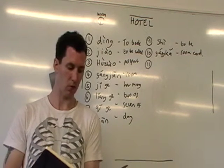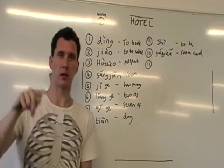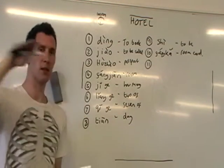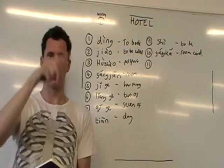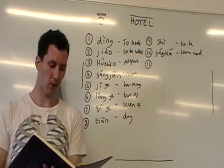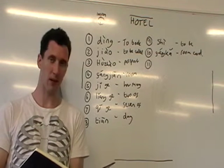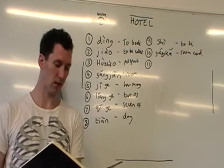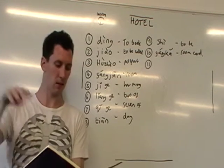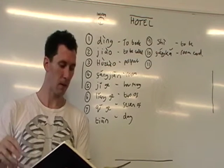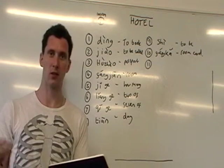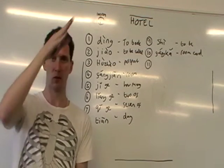Next: 'How many rooms?' We saw before — how many is jǐgè, jǐgè — and rooms is fángjiān. So jǐgè fángjiān — how many rooms? Almost finished. Next phrase: 'Is seven days correct?' The receptionist has seen your booking and is confirming. Qītiān — seven days — duì — correct, which we covered in a previous lesson — and then ma for the question. So qītiān duì ma — is seven days correct?